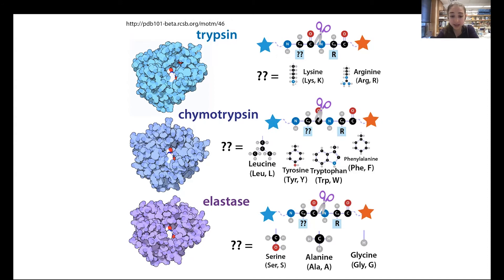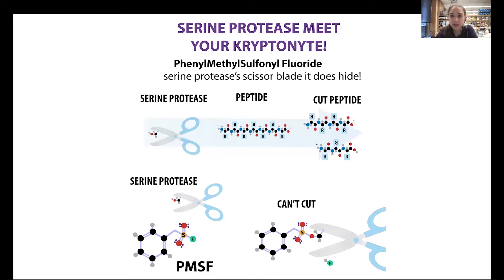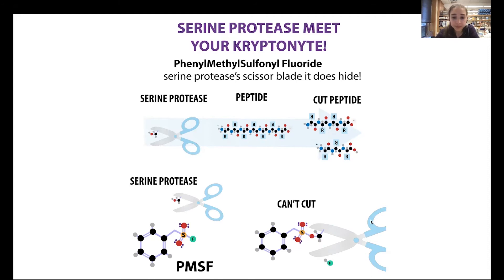We can inhibit serine proteases using inhibitors like PMSF — phenylmethylsulfonyl fluoride. It kind of mimics a peptide, tricking the serine protease, but then gets stuck on it. The serine can attack this sulfur, but when it does that it kicks off hydrofluoric acid and now it's stuck on — and it's not coming off. Water can't make it come off. This is irreversible inhibition.